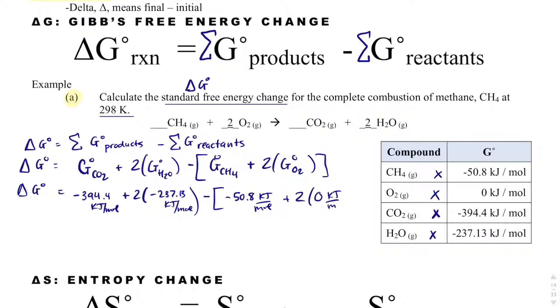And the reason why it's 0 is because this is the energy required or the energy released to form this compound. Well, oxygen exists naturally in the universe and on Earth, and so it actually doesn't take any energy to form. It just exists. So what I'm going to do is I'm going to get my delta G.